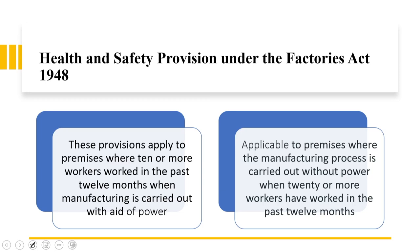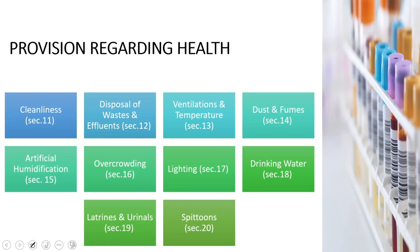Now let's look critically into the health and safety provisions under the Factories Act 1948. These provisions specifically apply to premises where 10 or more workers worked in the past 12 months when manufacturing is carried out with the aid of power, or 20 or more workers when manufacturing is carried out without power. Section 11 looks into cleanliness. Rather than touching upon provisions peripherally, I am giving you specific sections — section 11 deals with cleanliness.